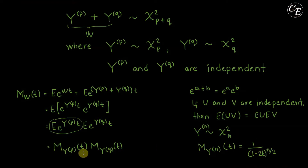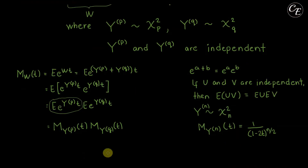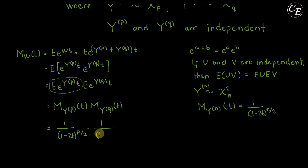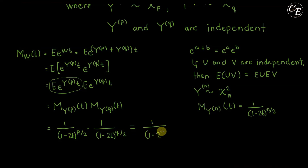So now let us use this formula to evaluate the MGF of Y_p and Y_q. For Y_p, it is 1 over (1 minus 2t) raised to p over 2. And for Y_q, we have times 1 over (1 minus 2t) raised to q over 2. Combining these terms, we have 1 over (1 minus 2t) raised to p over 2 plus q over 2, which is p plus q over 2.